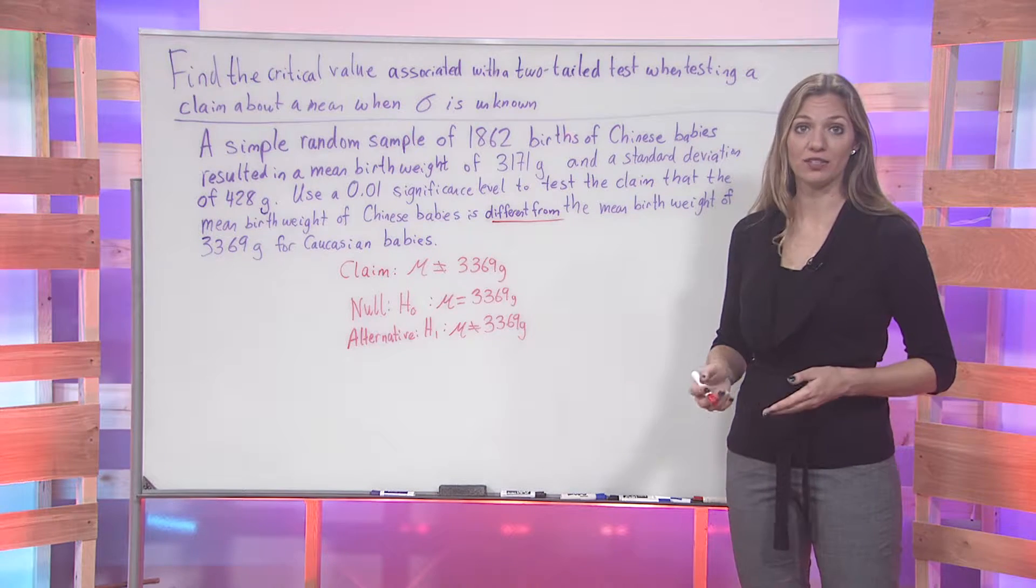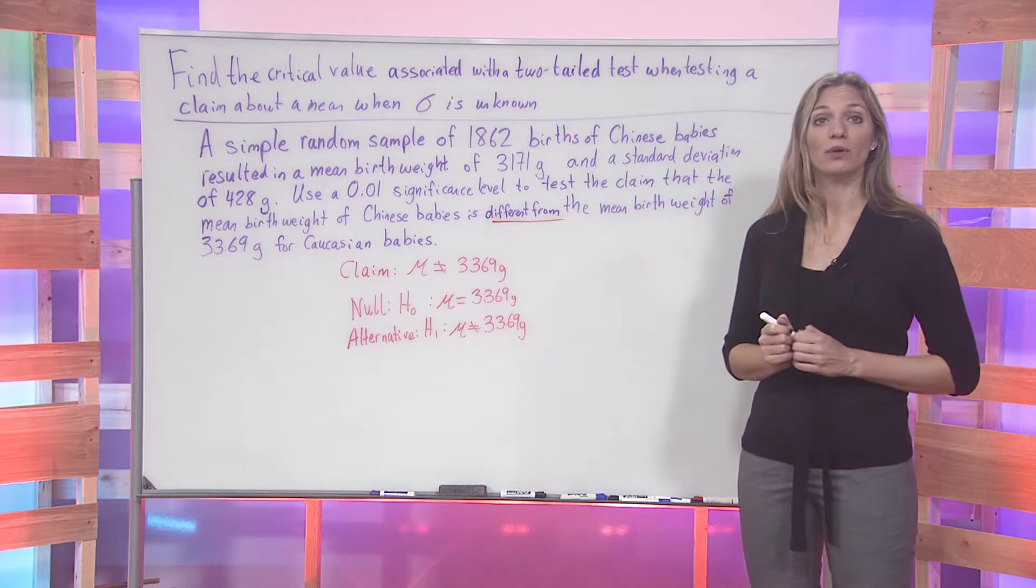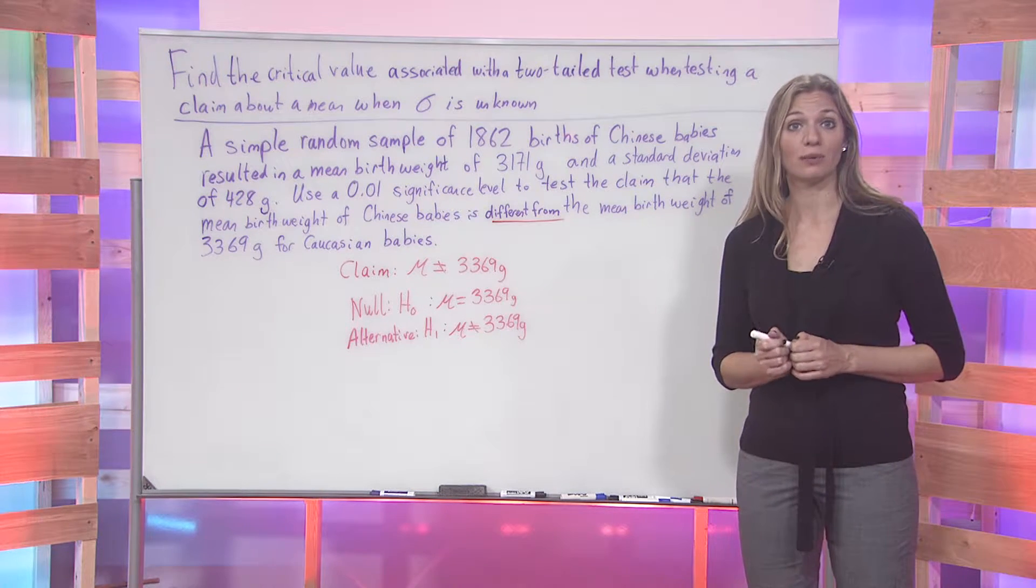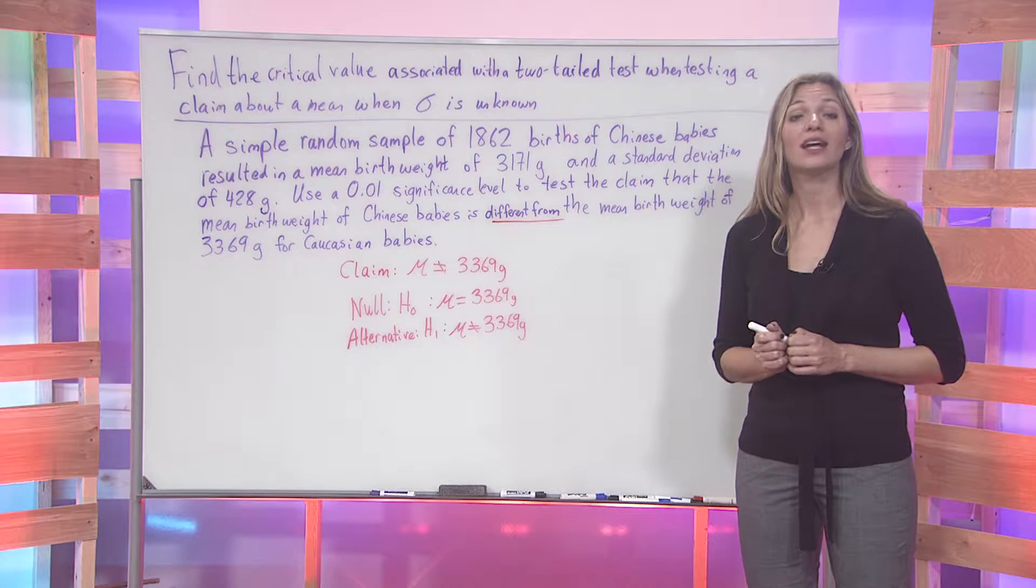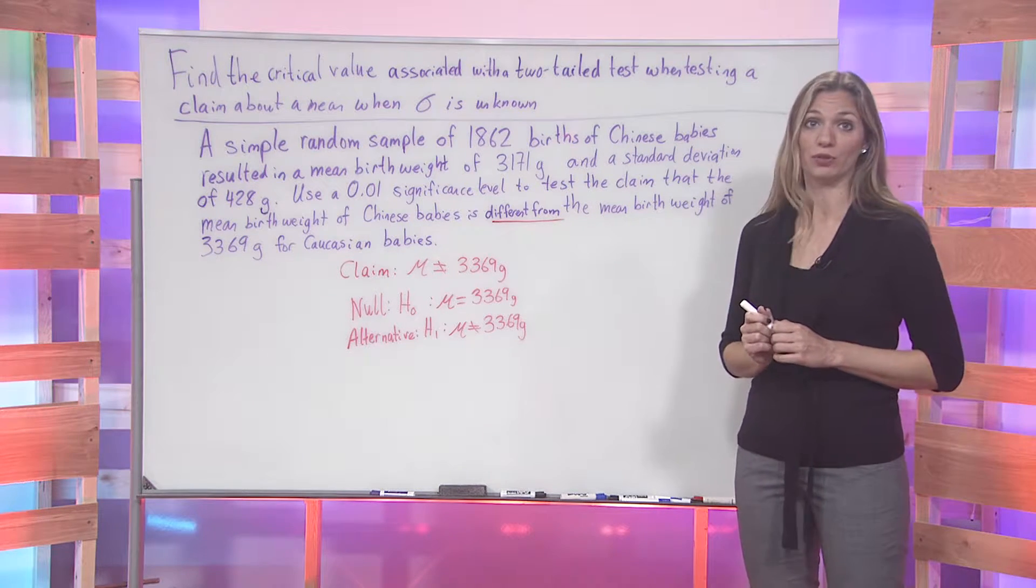This allows us to find our null and alternative hypotheses. The null hypothesis, as it always is, is the equality case. So we have mu equal to 3,369 grams. The alternative hypothesis here is not equal to.